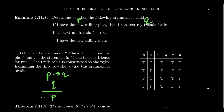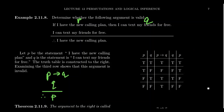We construct a truth table with four rows for all possibilities of P and Q, and then list every single premise — P implies Q, and Q — and then the conclusion P. We look for every row for which all the premises are true. In the first row, P implies Q and Q are both true, followed by a true P. In the second row, both premises are false, so we can ignore that row entirely — it has no bearing on the argument's validity. In the fourth row, one premise is true and the other is false, so we ignore that row too.